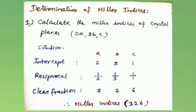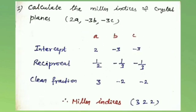Second problem: calculate the Miller indices of crystal plane with intercepts 2a, -3b, -3c. Here, 2a is along the x-axis, -3b is along the y-axis, and -3c is along the z-axis.